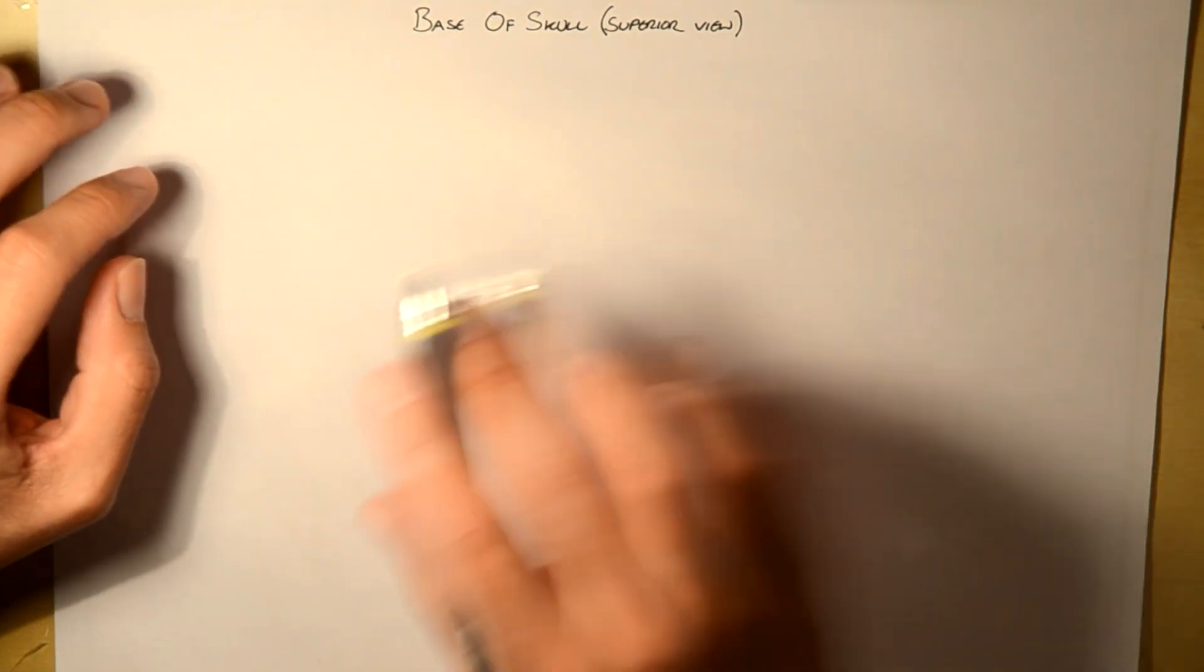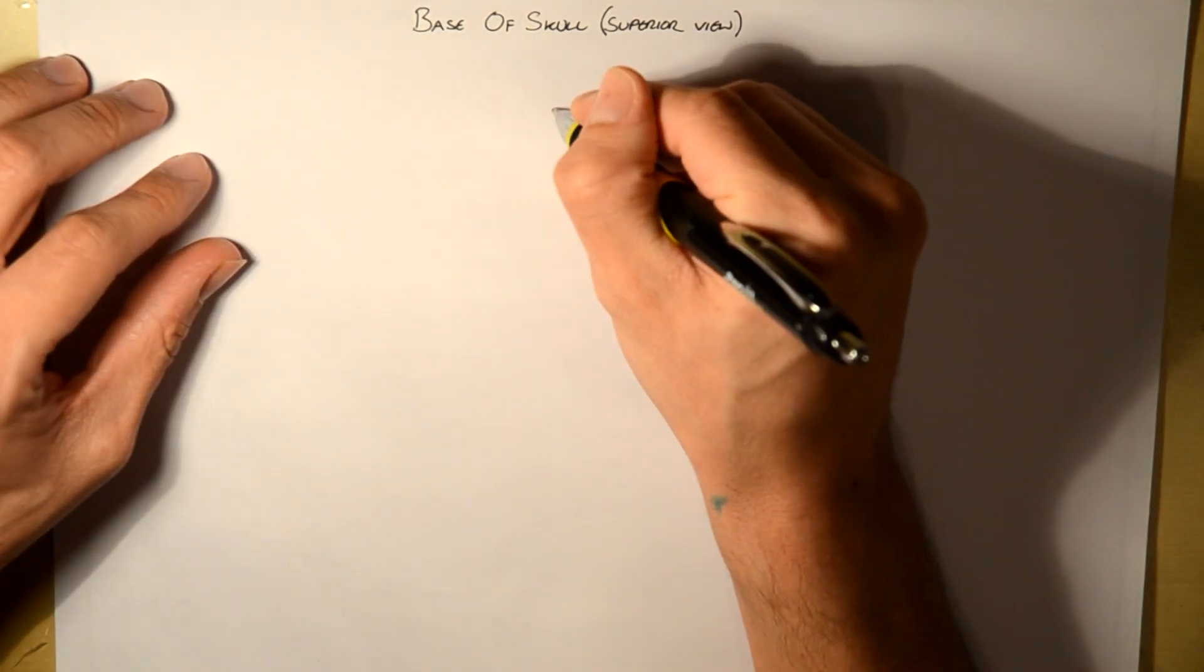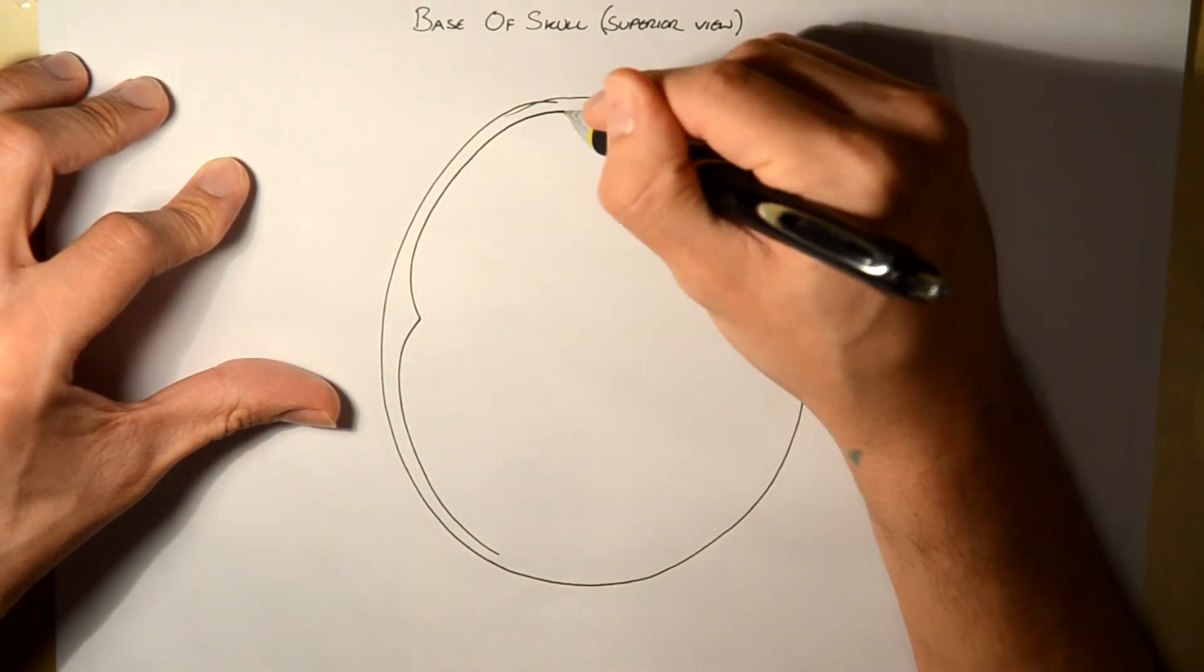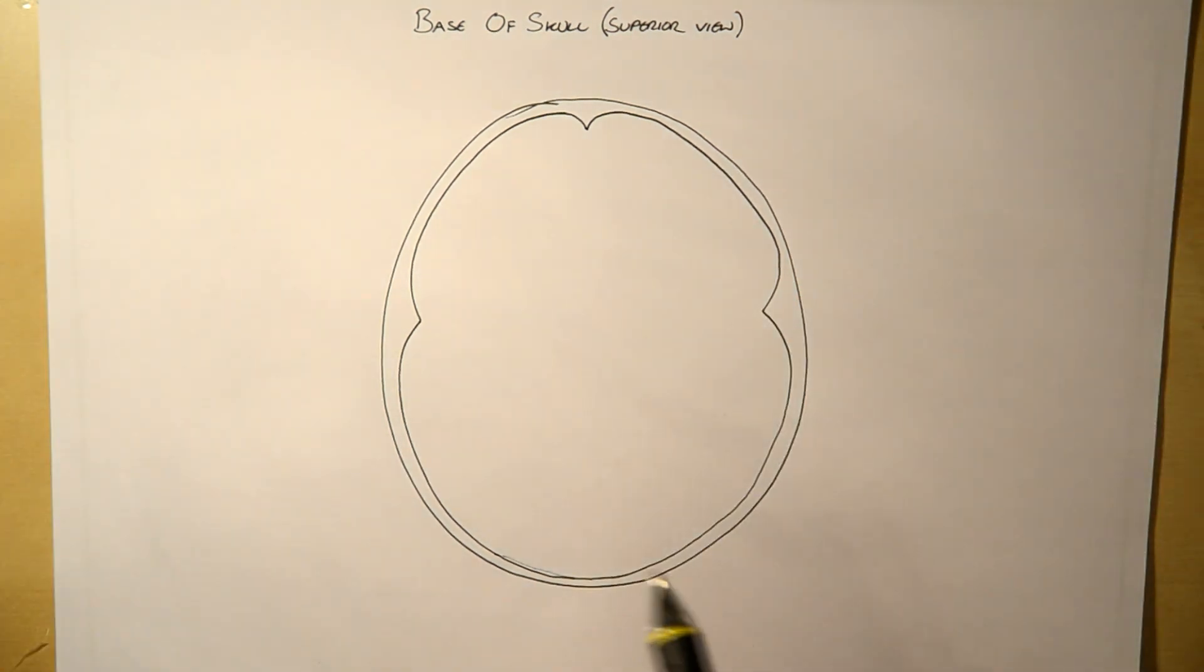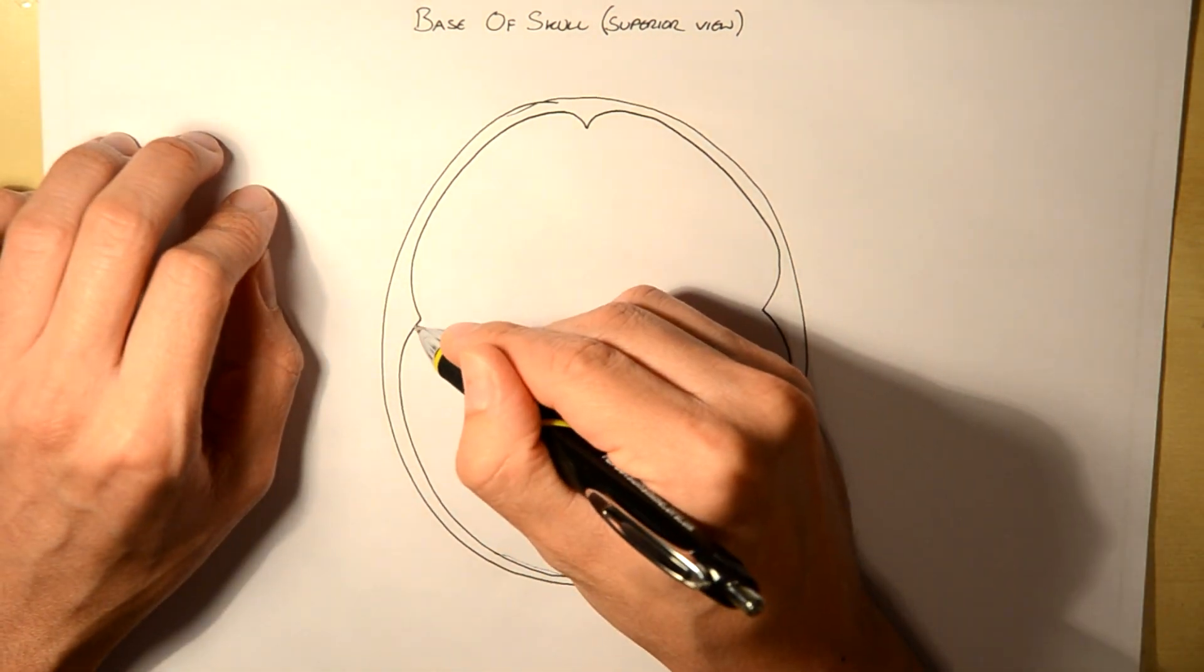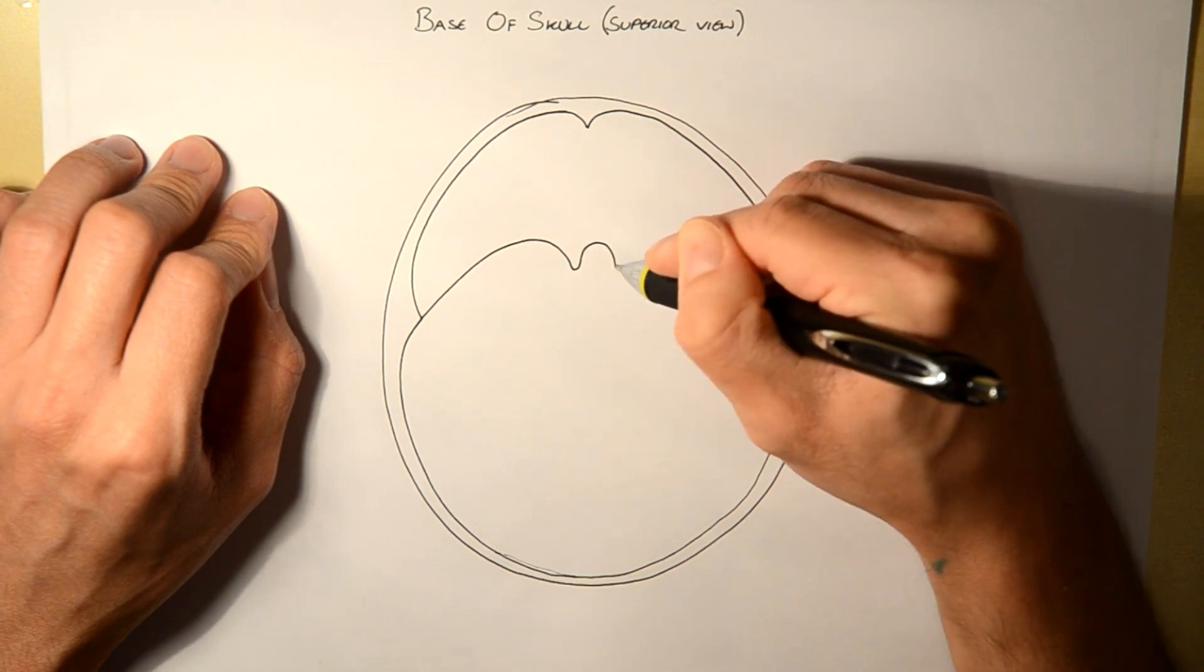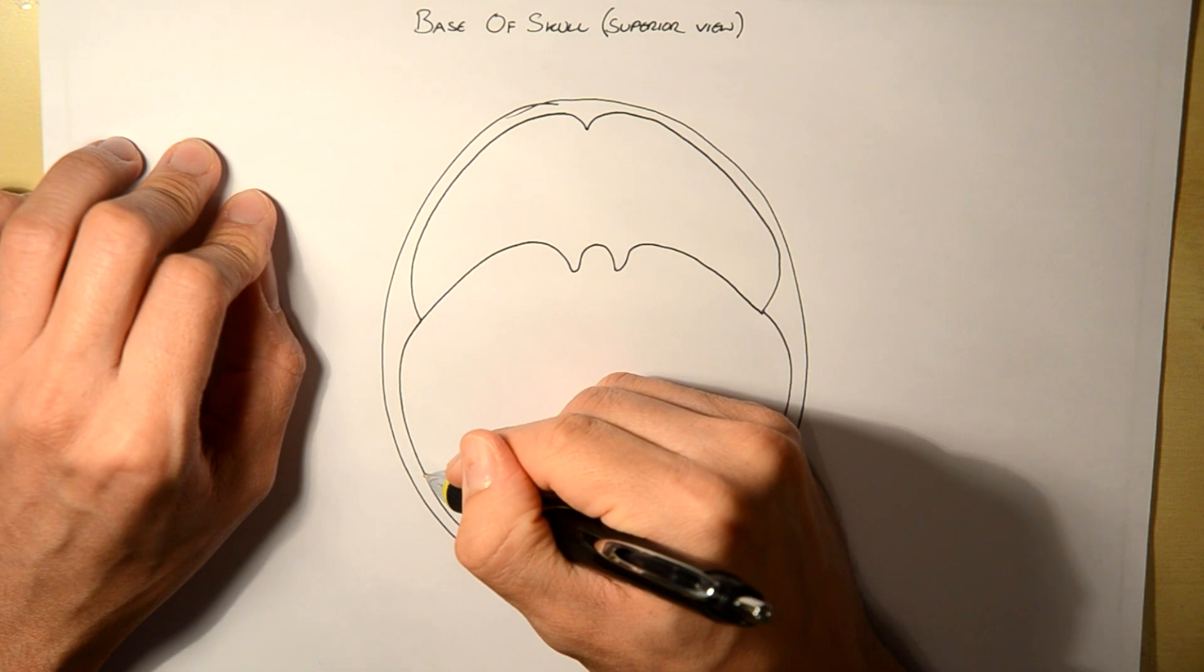So firstly we need to draw the base of the skull from a superior view, looking from the top. The easiest way I think to remember is by splitting them into three portions. So firstly draw like this, split the top half and then split the bottom half like this.